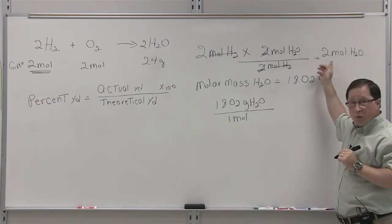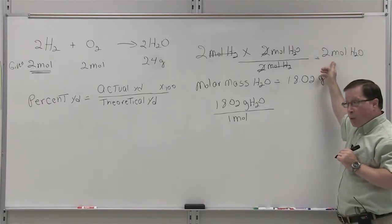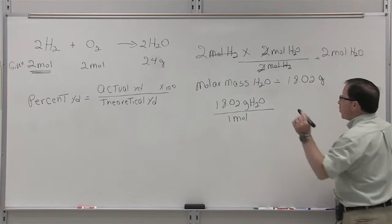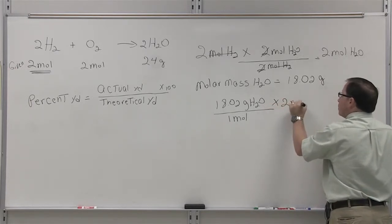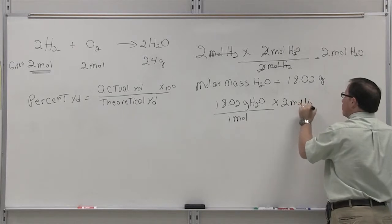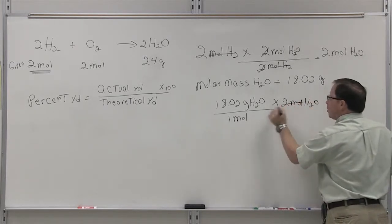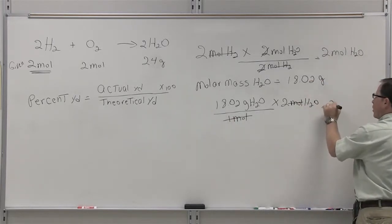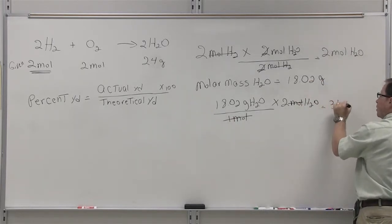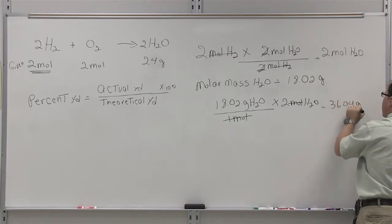Now, we learned that the theoretical yield for this process is two moles. So if we multiply this fraction times two moles, our moles of water, our moles will cancel, and we're left with 36.04 grams of water.